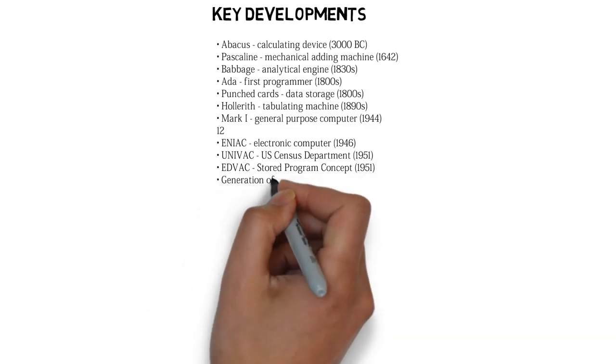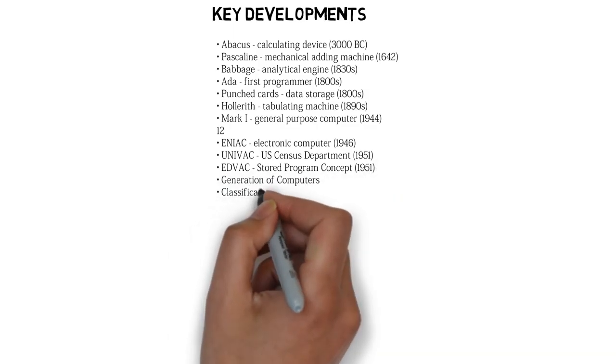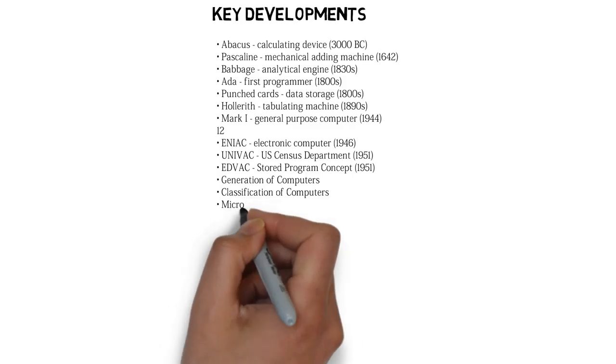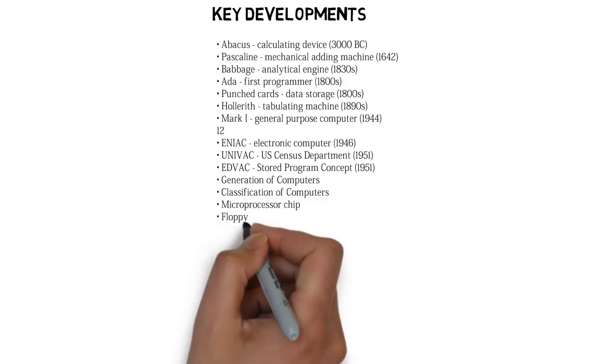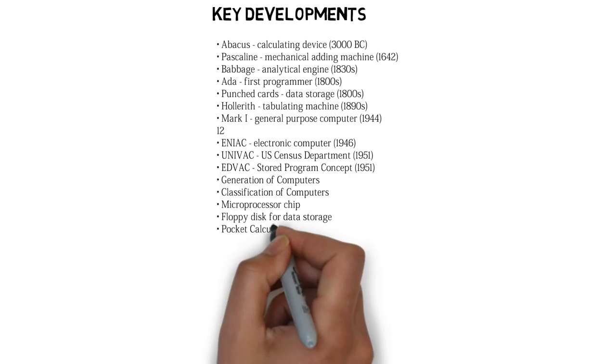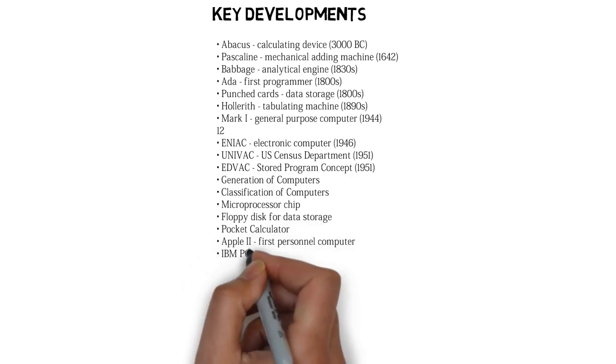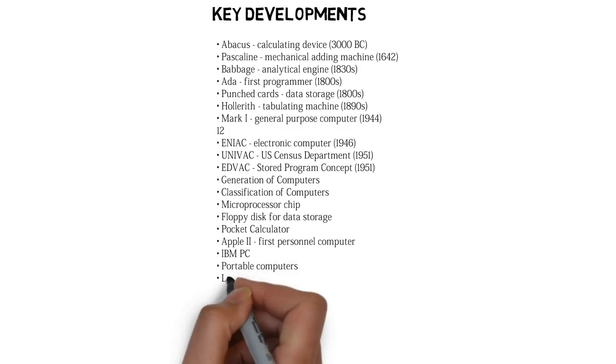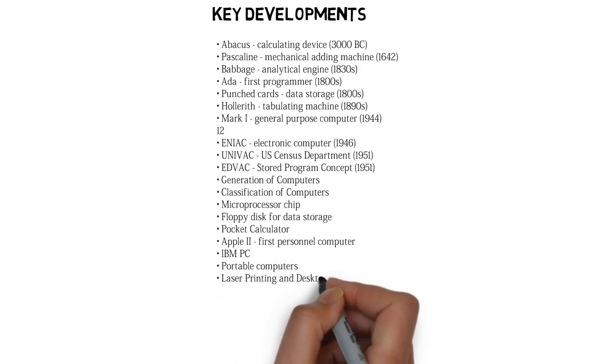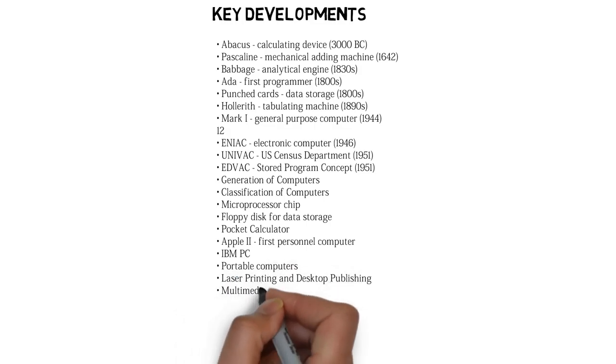Generation of Computers. Classification of Computers. Microprocessor Chip. Floppy Disk for Data Storage. Pocket Calculator. Apple II First Personal Computer. IBM PC. Portable Computers. Laser Printing and Desktop Publishing. Multimedia Desktop Computers. Home Video Computers. Video Conferencing.